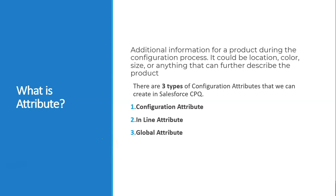Let's talk about what an attribute is. You can think of an attribute as putting additional information about the product — it can be color, it can be size, it can be location. Any additional information which gives more info about the product is an attribute, like more features about it. For example, if you are ordering a shirt, you might need to know the size and the colors.